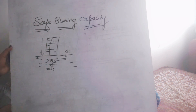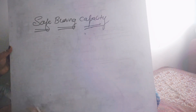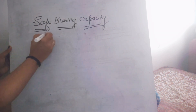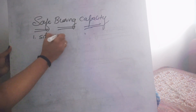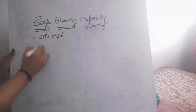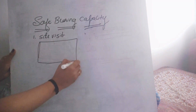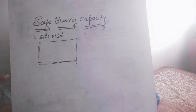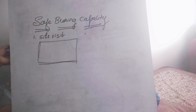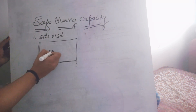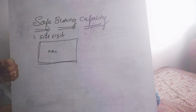When you go for a site visit, you first find a plain land. After the visit, you need to understand whether that particular site is able to resist the load being subjected by the building. So we need to find out the SBC there. To find out the SBC we have some formulas which are very helpful for the site engineer.